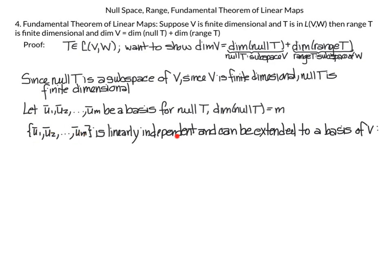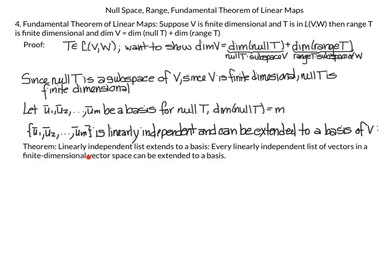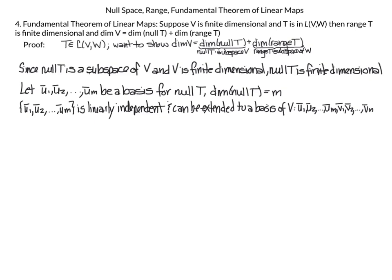Since u1, u2, …, um is a basis for null(T), this set is linearly independent and can be extended to a basis for all of V. We use the theorem that any linearly independent list of vectors in a finite dimensional vector space can be extended to a basis. So we extend the basis of null(T) to a basis for all of V by adding additional vectors v1, v2, …, vn.